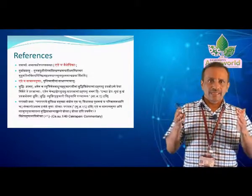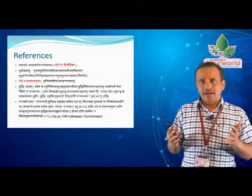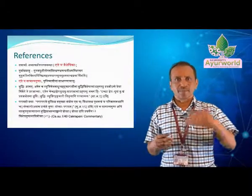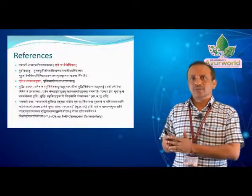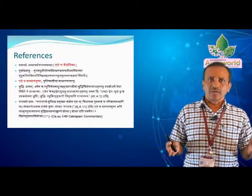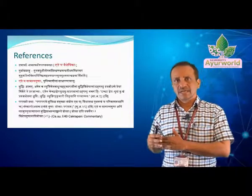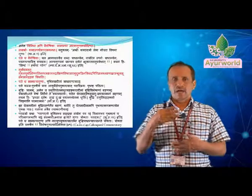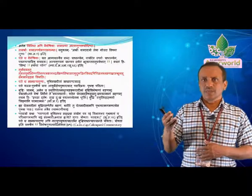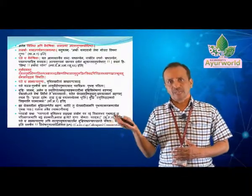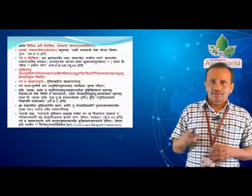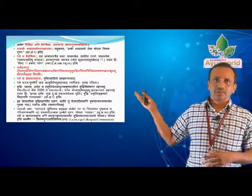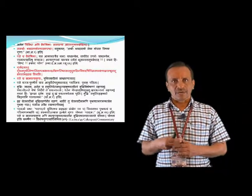With this, we conclude today's class or discussion on Guna and its classification. We have the understanding that Guna is present in Dravya along with Karma — it is separate from Karma; it is not the action but a property — which can be used in our treatment principle based on Samanya and Vaisheshit Diddhanta. We also know that there are 41 Gunas, classified into Adhyatmika Gunas and Atma Gunas (6), and the Vishishta or Vaisheshik Gunas (5) understood through senses, Guruvadi Gunas (20), and Paradi Gunas (10) useful in planning treatment. We also know the differences in classics and why we use these Gunas in Santarpana, Patarpana, and Chikitsa. Thank you very much.